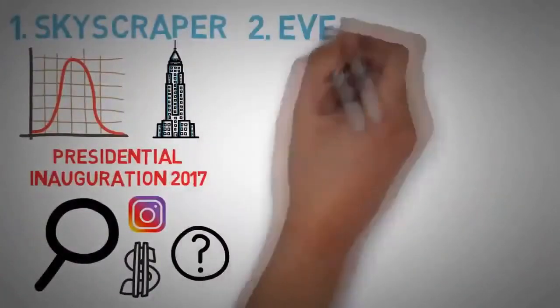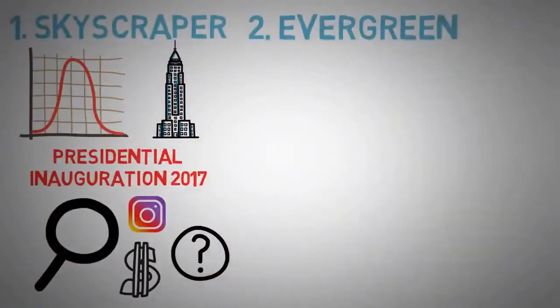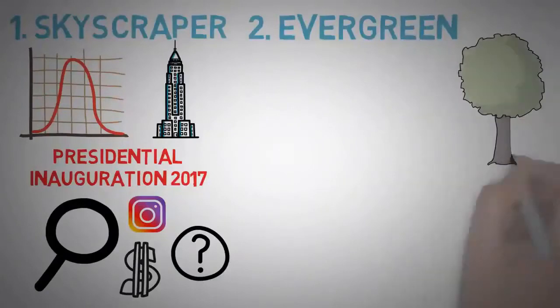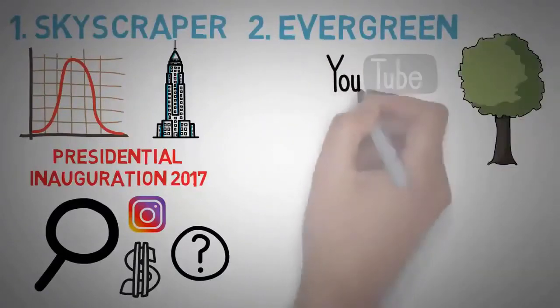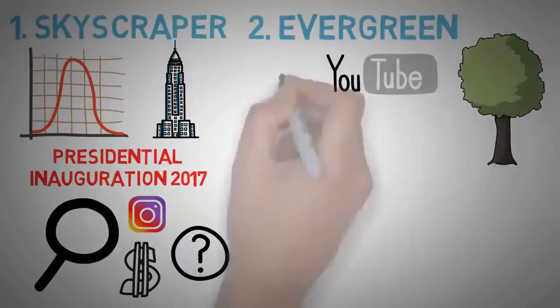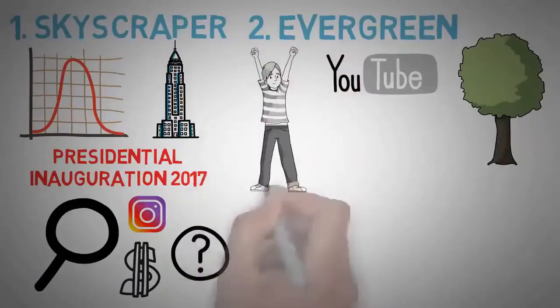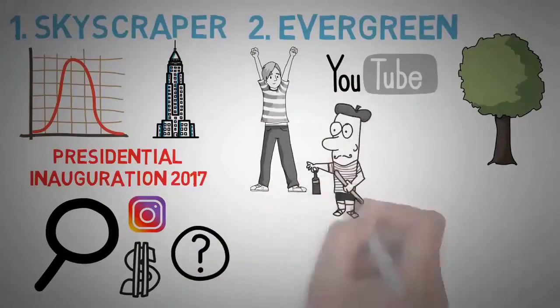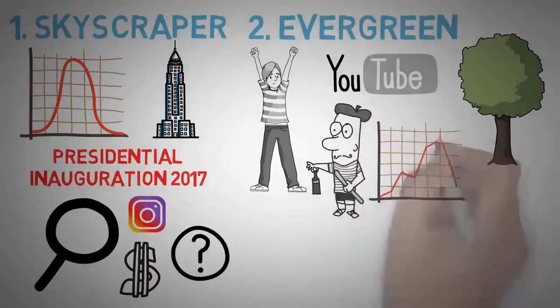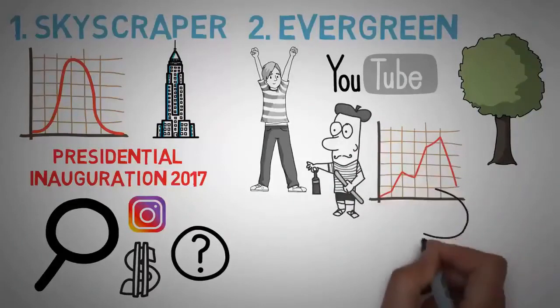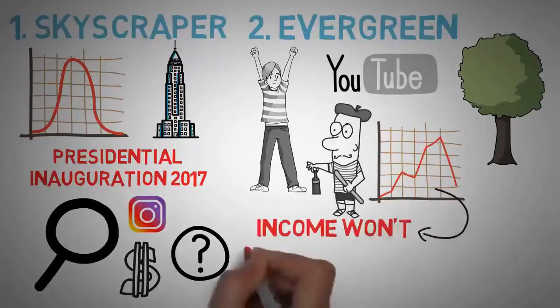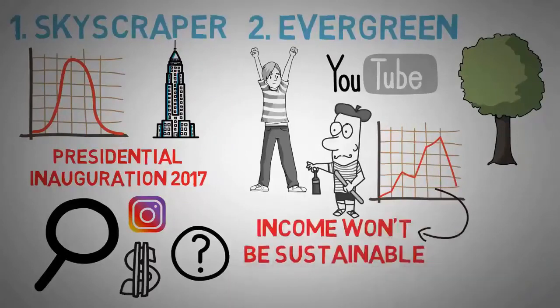The second type of content is called evergreen, and just like the tree it stays fresh and valuable all year long. For example, my how to get more YouTube subscribers videos will get views and add value to lives for at least the next five years, while my friend's video of him doing a rare bottle flip won't. Just like the Harlem Shake died down, so will bottle flips and the next trends. Now you can make money with these kinds of trends, but you have to be able to predict them, and the downside is that the income won't be sustainable - it'll be a lump sum.